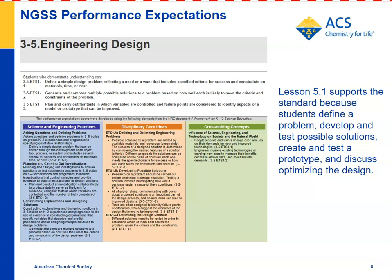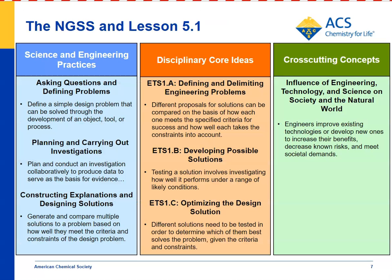Third to fifth grade ETS 1-3: plan and carry out fair tests in which variables are controlled and failure points are considered to identify aspects of a model or prototype that can be improved. Students test citric acid and cream of tartar as acids and mix them with the same amount of baking soda to see which one forms gas the fastest and produces the most gas to inflate a bag quickly and float a cell phone to the surface.